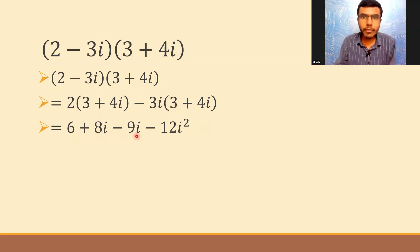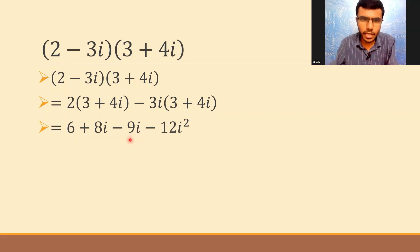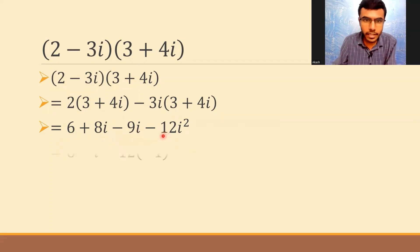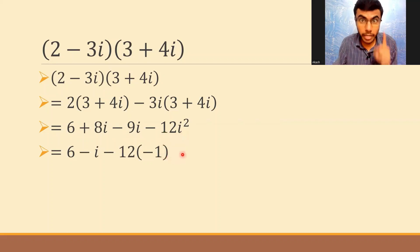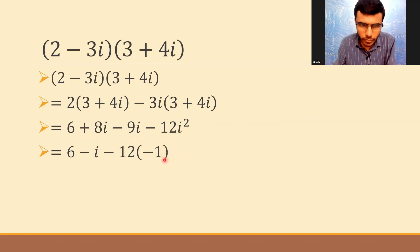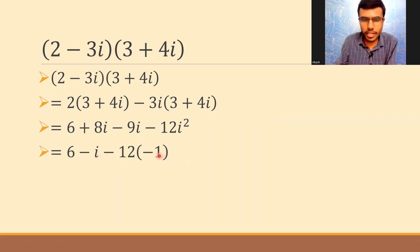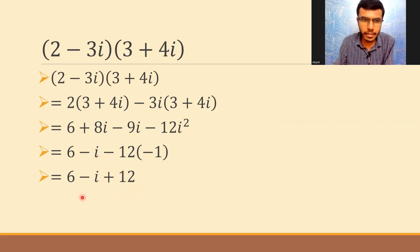What is 8i minus 9i? Minus i. So this would be nothing but 6 minus i, and then i squared is nothing but minus 1. Remember, i squared is nothing but minus 1. So this would be 6 minus i. Minus into minus 1 would be plus, so 6 minus i plus 12. And 6 plus 12 is 18, giving us 18 minus i.